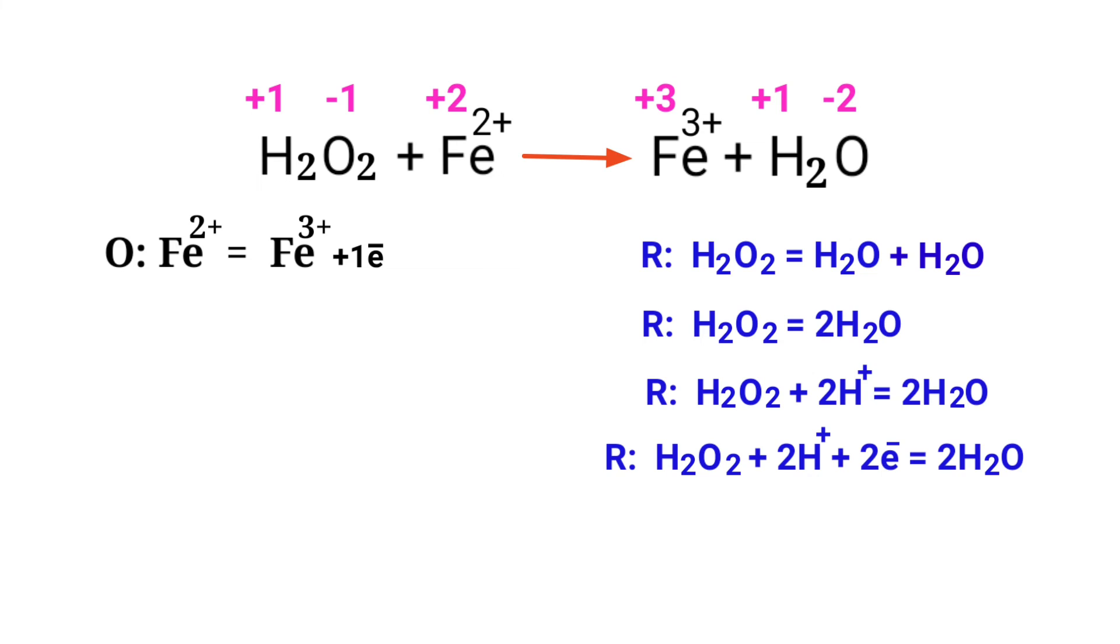Now you can balance the number of electrons in the two half reactions. To do this, you can multiply the oxidation half reaction by a coefficient of 2.